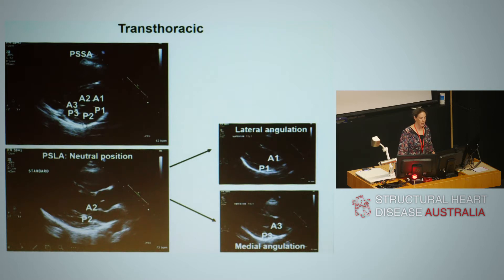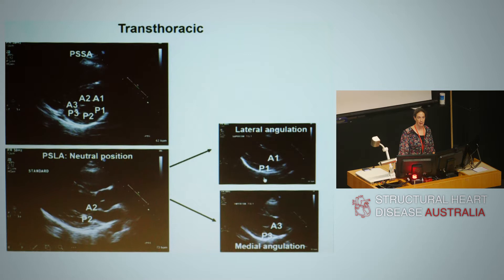We can look in parasternal long axis in the neutral position, and here we can see the central segments, A2 and P2. If we use this image and tilt superiorly, we'll angulate towards the anterolateral commissure and can see A1 and P1. From the neutral position, if we tilt inferiorly, we will see A3, P3, interrogating the medial aspect of the valve.